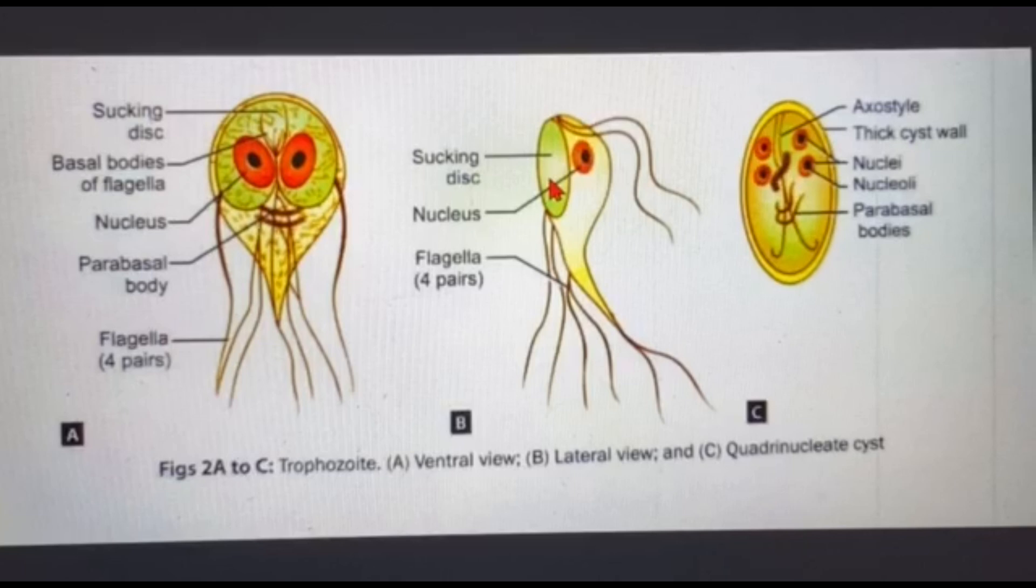The infective form, if you see, is the cyst. Now this cyst is definitely different from this scary doll, I say. The cyst is oval shaped, it has a thick cyst wall, and instead of these two big eyes, it has two pairs, that is four nuclei. A stem-like axis that you can see is the axostyle and the parabasal body which doesn't really look like a wicked smile here.